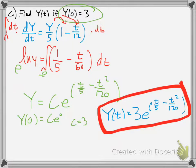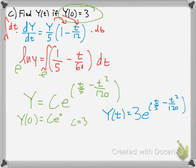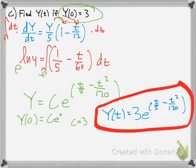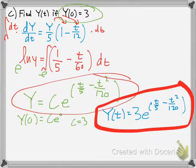Simple anti-derivative rules here. The anti-derivative of 1 over 5 is t over 5. Anti-derivative of t over 60 is t squared over 120. Then it converts to this because you're raising everything to the e, so you just get Y.